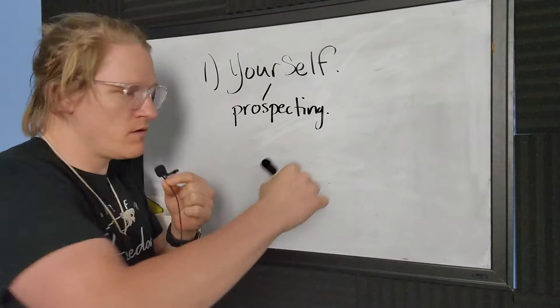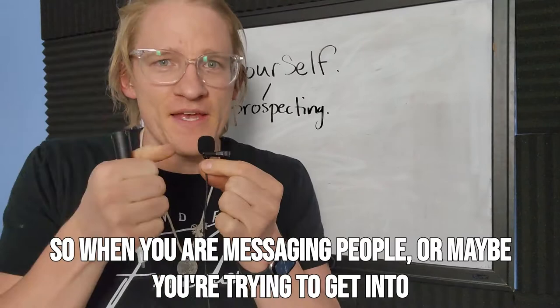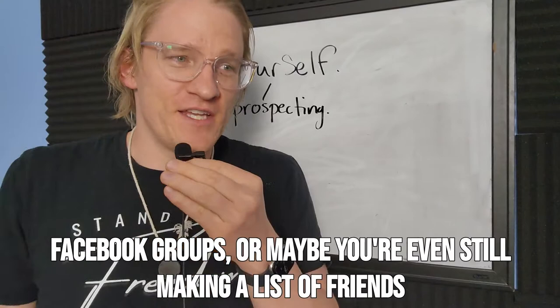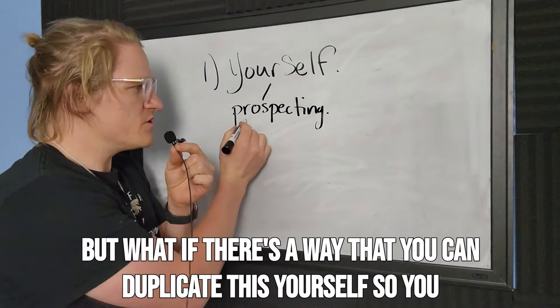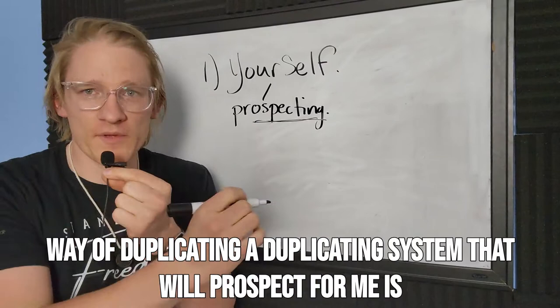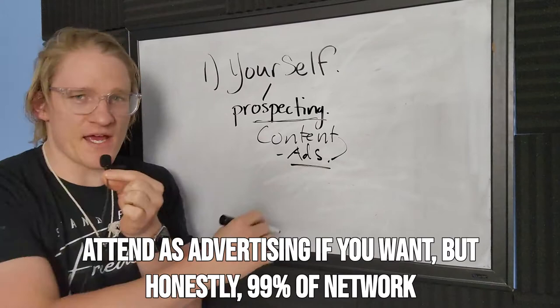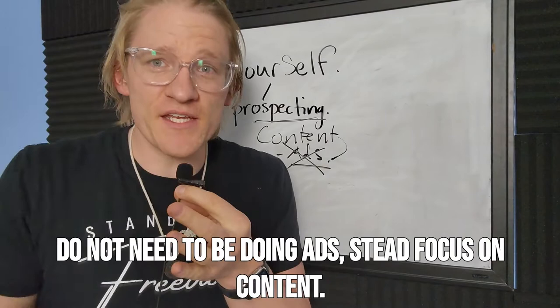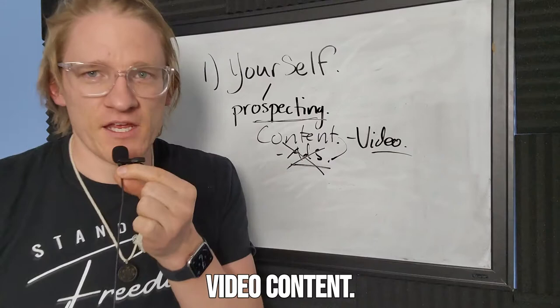The first thing you need to duplicate is your prospecting. When you are messaging people, or getting into Facebook groups, or making a list of friends and family, this is what's called prospecting. My favorite way of creating a duplication system that will prospect for me is through content. You can use this content as advertising if you want, but 99% of network marketers do not need to be doing ads — instead focus on content, video content.